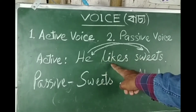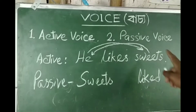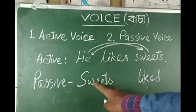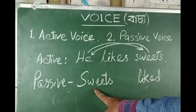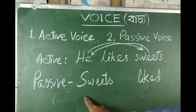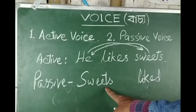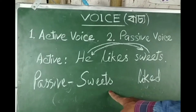In the active voice, identify the tense and take the 'be' form accordingly. Move the object to the subject position. Determine whether the subject 'he' is singular or plural, and choose the correct form of 'be'.